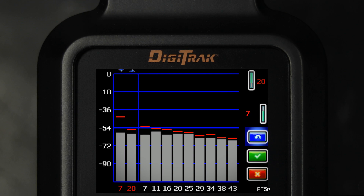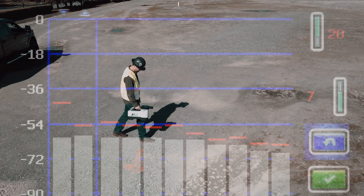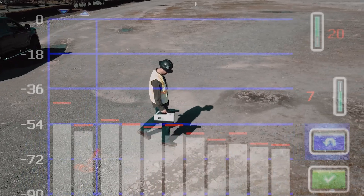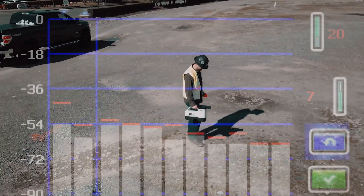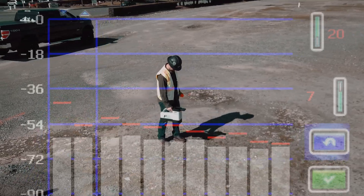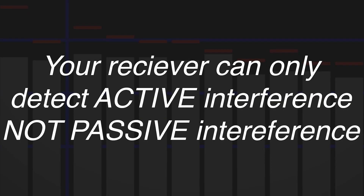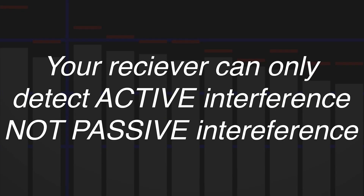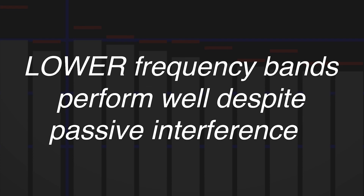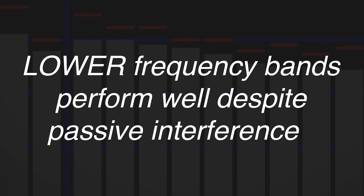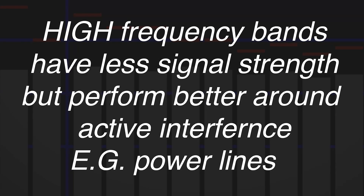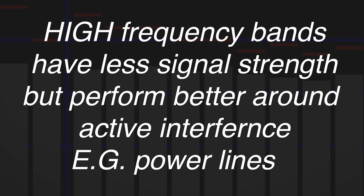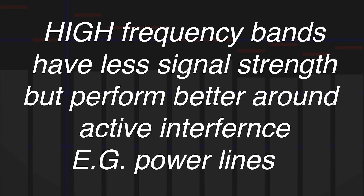With the frequency optimization results displayed, walk the receiver along the bore path while observing the noise readings and mark those points where significant changes occur. Your receiver can only detect active interference, not passive interference. Lower frequency bands tend to perform well despite passive interference. High bands have slightly less signal strength, but tend to offer better performance around active interference such as power lines.